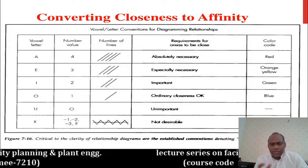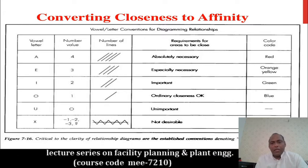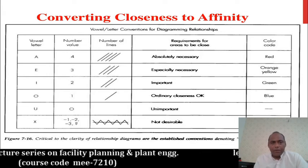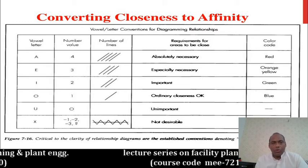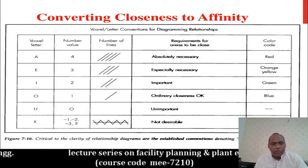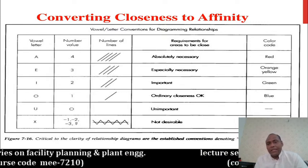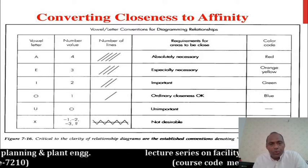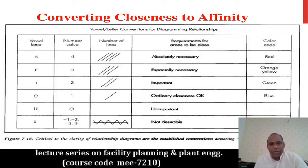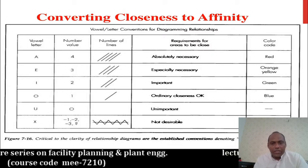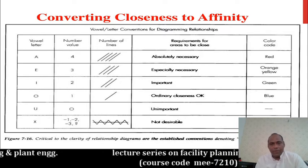This is the closeness rating. The vowel letters A, E, I, O, U, and X are given to activities. The number of lines and values represent the requirement of the area. If two activities have an A relationship, it means that is 'absolutely necessary.' If they have an E relationship, it means 'especially necessary,' and an I relationship means 'important' but not absolutely or especially necessary.